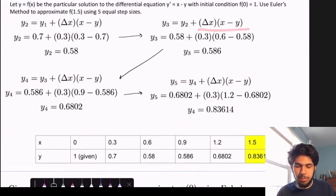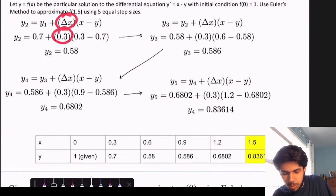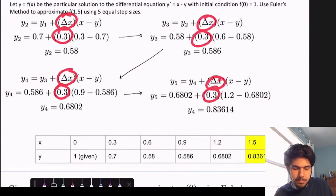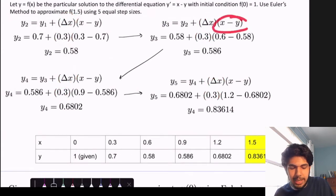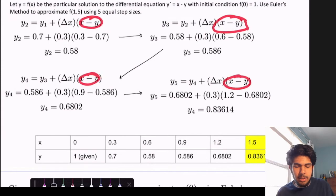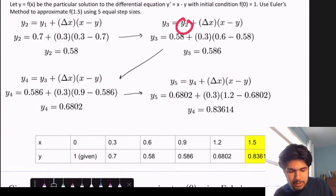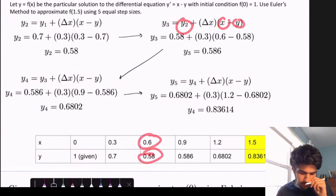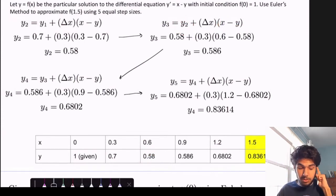But again, it's using the same formula. And note how delta x is always 0.3 here, because that's the size of our step. And we note that we use x minus y, because that's what dy dx is. And then we see that each of these values comes from the previous box.